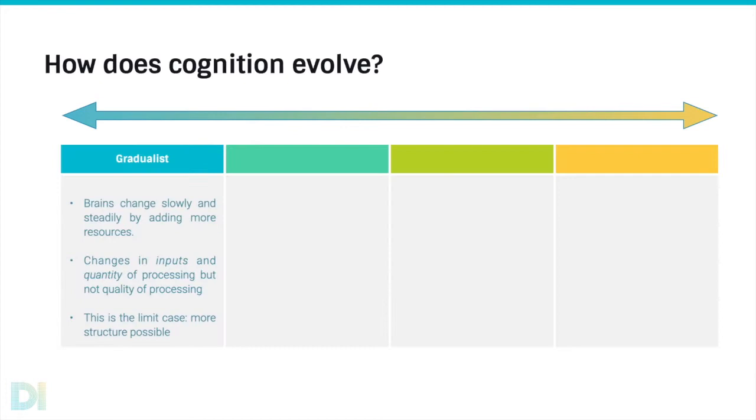Now this very gradualist picture is something of a limit case. You might think that there's a little bit more structure possible. So currently hierarchical Bayesian models are very popular. And there you've got more capacity and maybe also a few more levels in the hierarchy could be added. But in general, the gradualist picture says there are one or a handful of types of process, and then more resources devoted to them in some way or another.